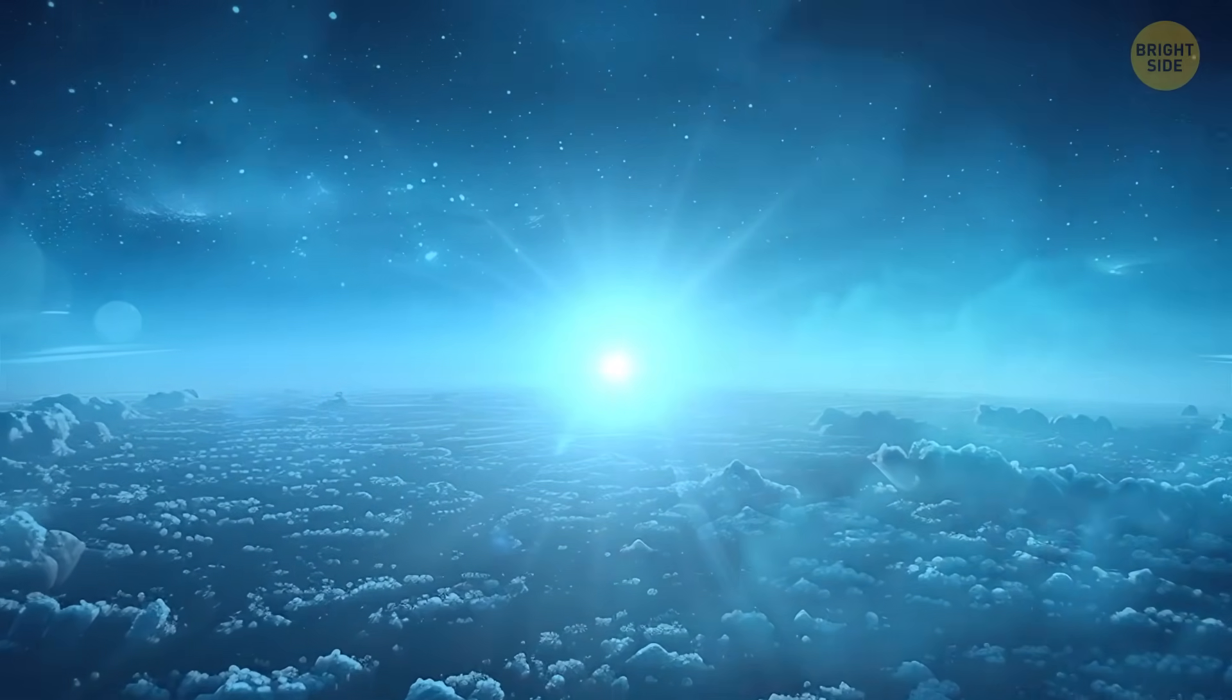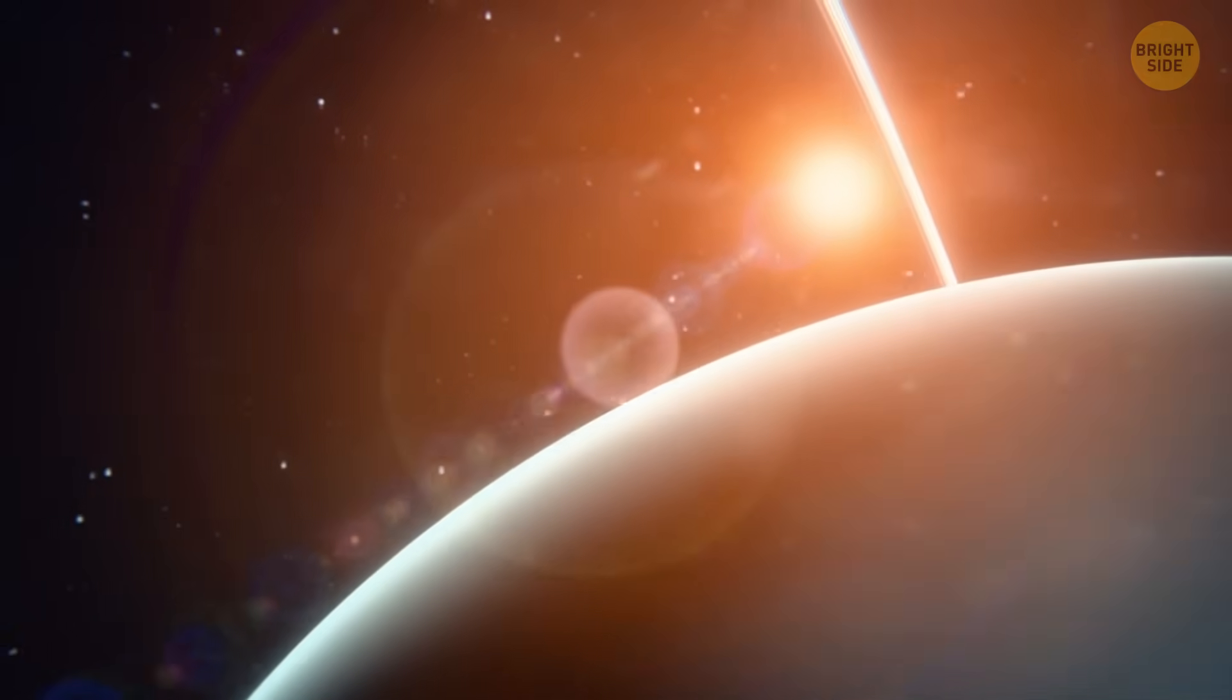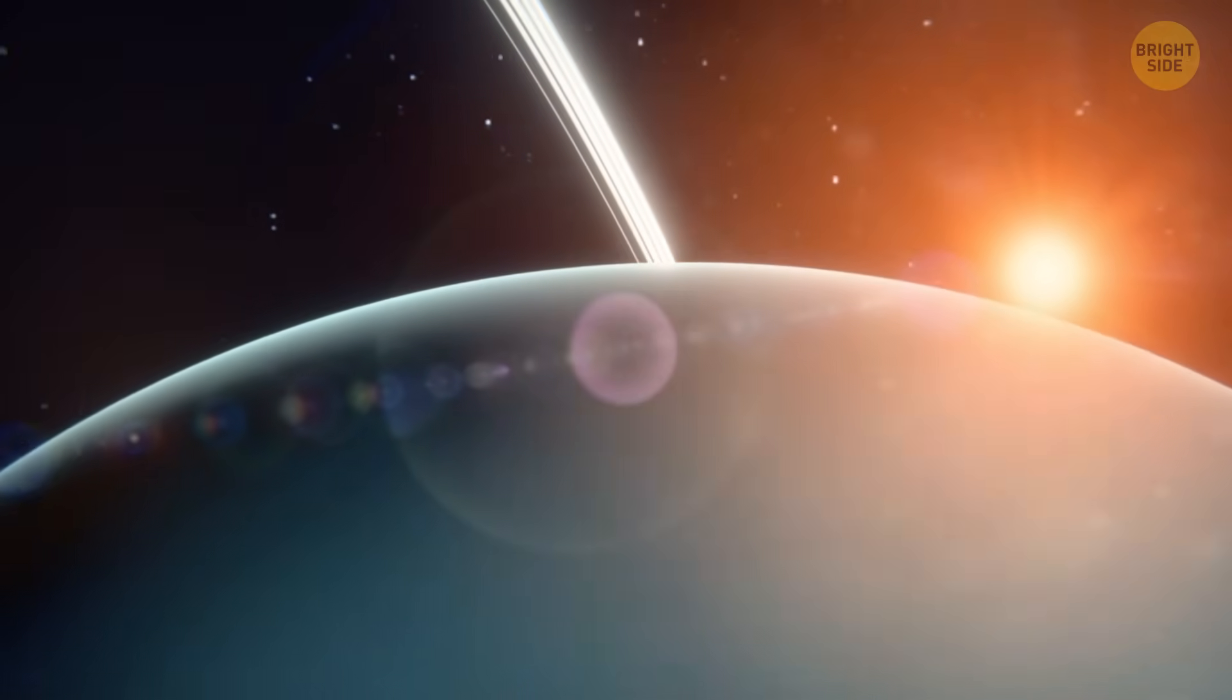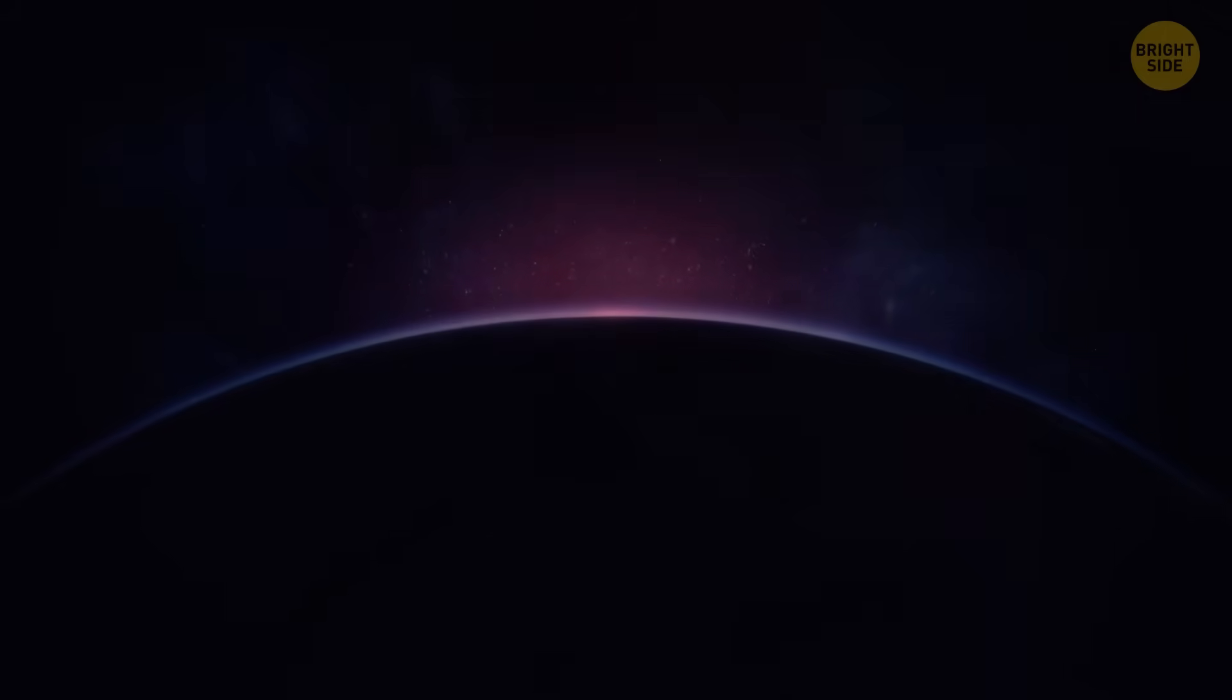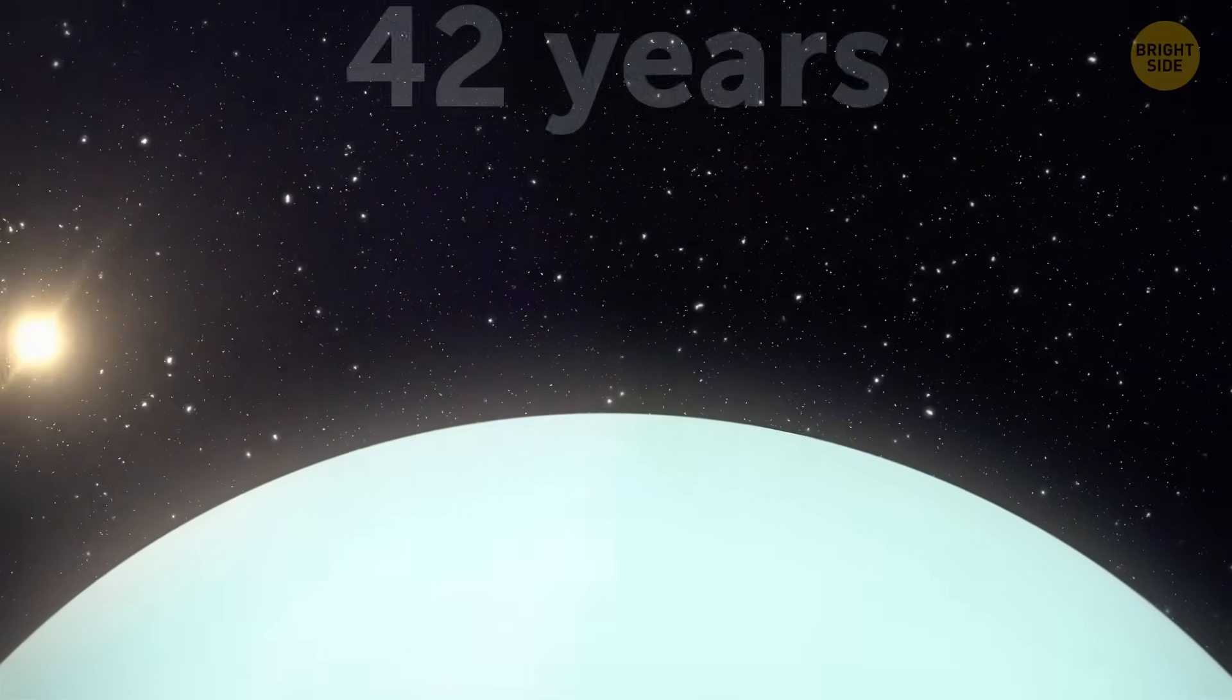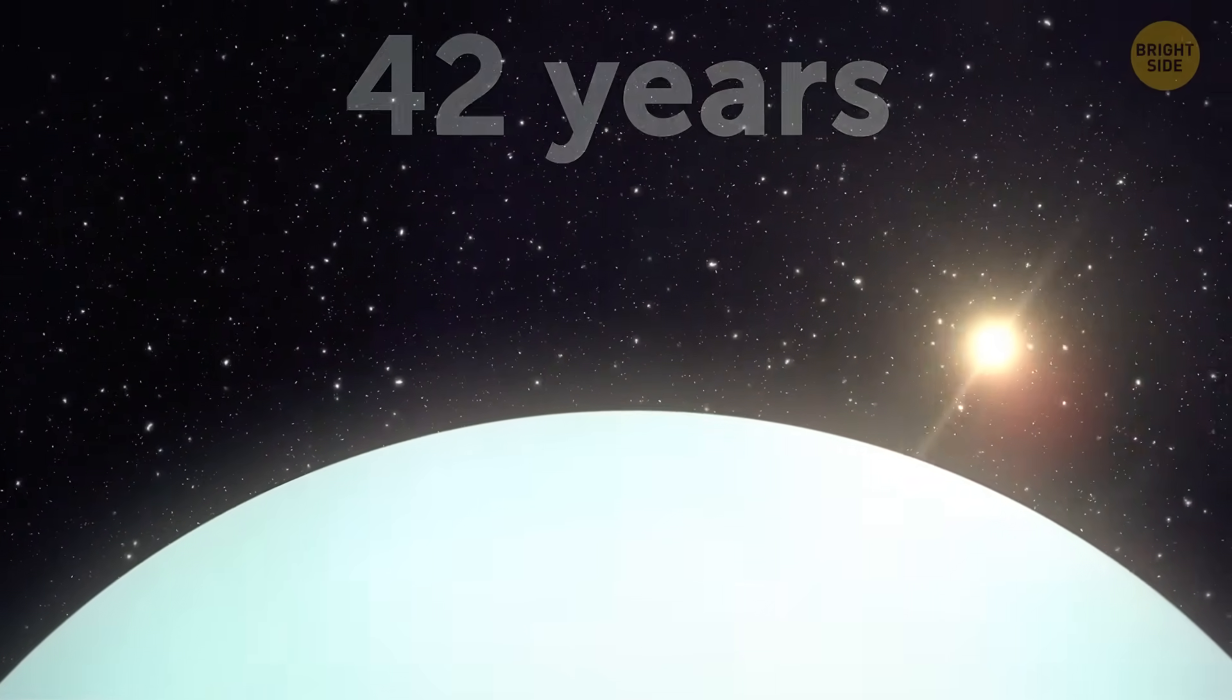You'd see the sun rise in the east, just like on Earth. But then it would keep going around the sky in a tilted path, like a lazy spiral. About the sunset though, I hope you have some patience, because it would take 42 years for the sun to complete one full circle around Uranus' sky. That's a really long time to wait before finally going to bed.